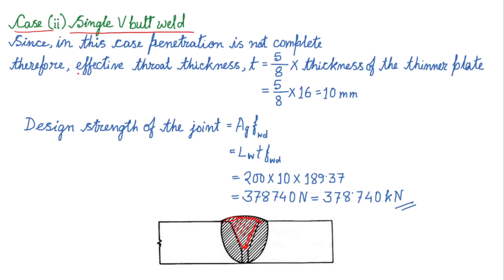That's why in this case incomplete penetration will take place, that is the penetration is not complete in this case. Therefore the effective throat thickness small t is taken as five by eight into thickness of the thinner plate. That means five by eight into 16, here the thickness of the thinner plate is 16, so finally the effective throat thickness has been calculated as 10mm.